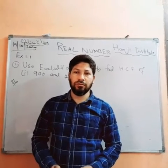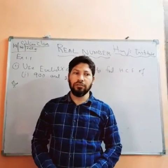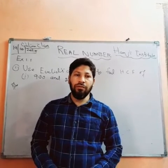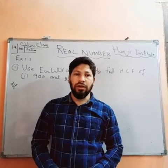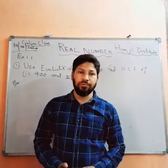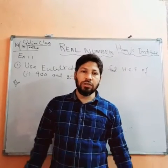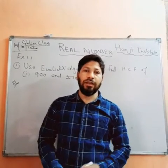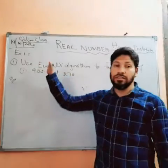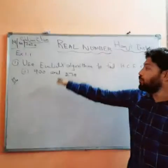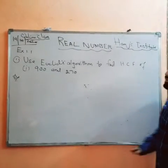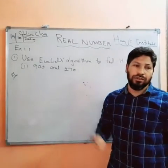Welcome to online classes in Hux Institute. Today we will discuss real numbers questions from the SSE chapter. The first question of exercise 1.1, which you can see on the board, is: use Euclid's algorithm to find the HCF of 900 and 270.